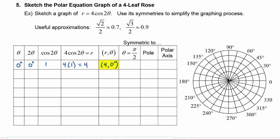Coming over to our graph, we start at the pole, point towards zero degrees, and walk out a distance of four — one, two, three, four — and we put a point there.